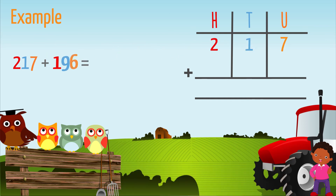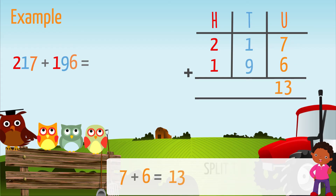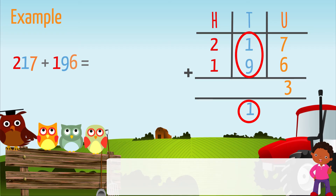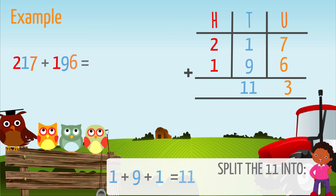Add the units: seven plus six equals 13. Split the answer 13 into one ten and three units. We will then write three in the units column and one under the equal sign in the tens column. Add the tens: one plus nine plus one carried over equals eleven.